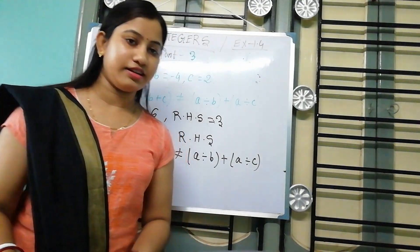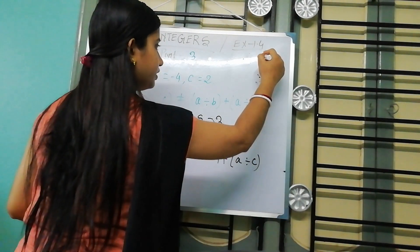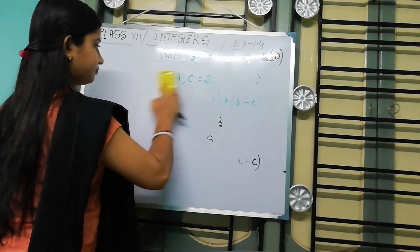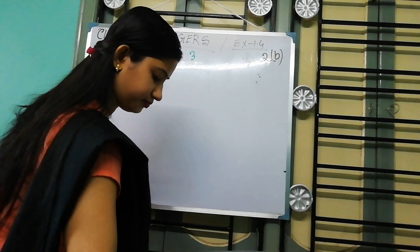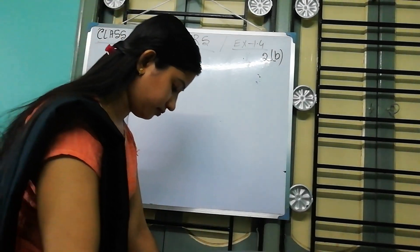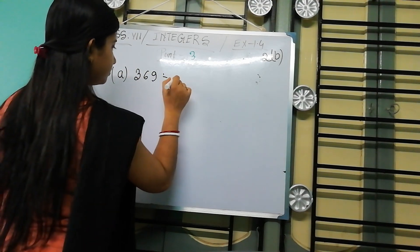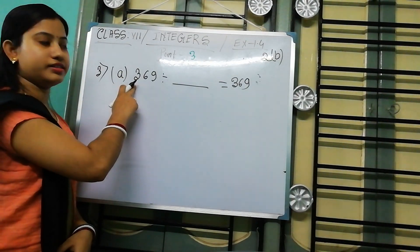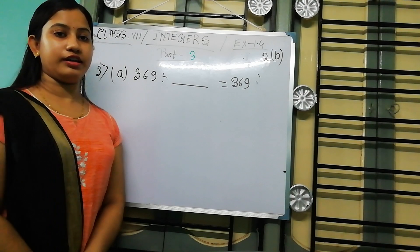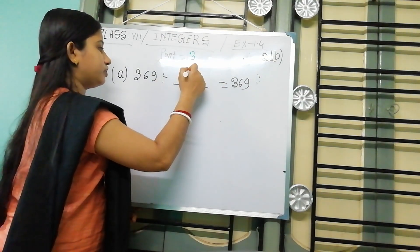Now next, fill in the blanks, number 3. Part A: 369 divided by blank equals 369. Now if we divide a number by 1, then we get that same number. So the answer is 1.